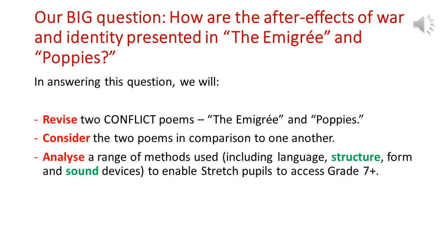The big question that we're going to focus on for Poppies and The Emigrée is: how are the after-effects of war and identity presented in The Emigrée and Poppies? By looking at this question we're going to revise both poems and look at key quotations, think about the poems in comparison to one another, and analyse the range of methods — language, imagery, structure, sound, etc.